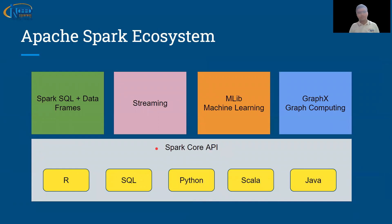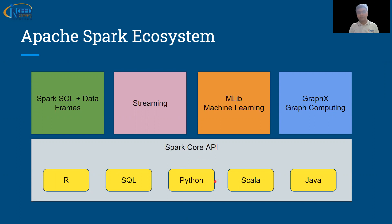Let us now look at the ecosystem. The ecosystem starts with the Spark Core API — this is the fundamental underlying API that allows all Spark functionalities to work. This API provides in-memory computing functionality and APIs for Python, Scala, and Java. On top of it, we have Spark SQL plus DataFrames, Spark Streaming, MLlib, and GraphX.